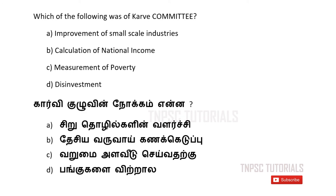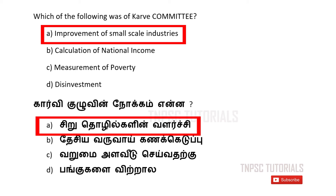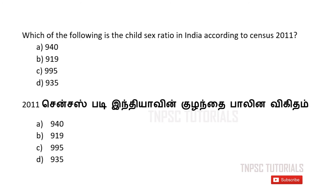A) Improvement of small scale industries. B) Calculation of national income. C) Measurement of poverty. D) Disinvestment. The answer is A — improvement of small scale industries. Eighth one: Which of the following is the child sex ratio in India according to Census 2011?